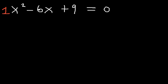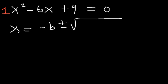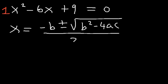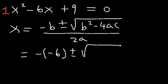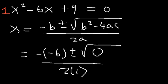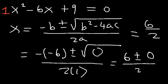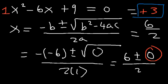Now let's prove it using the quadratic formula. x is equal to negative b plus or minus square root of b squared minus 4ac, divided by 2a. b is negative 6, and the discriminant was 0, divided by 2 times 1. Negative times negative 6 is positive 6. The square root of 0 is 0, divided by 2. 6 plus or minus 0 is still 6, so this is simply 6 over 2, which gives a final answer of positive 3. Since the discriminant equals 0, we only have one real solution.